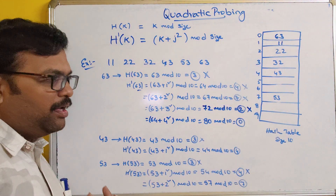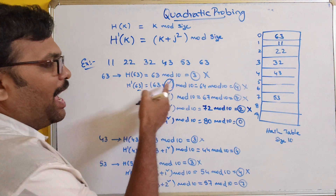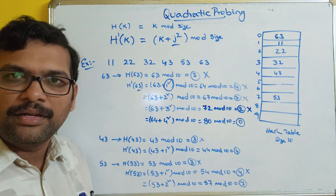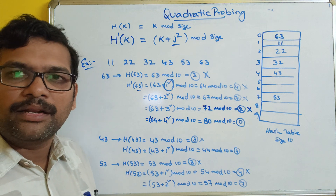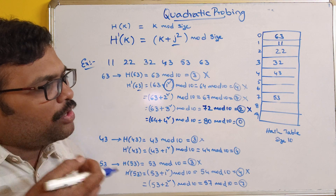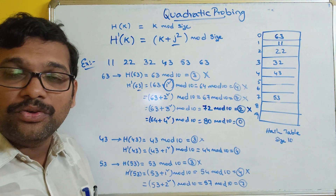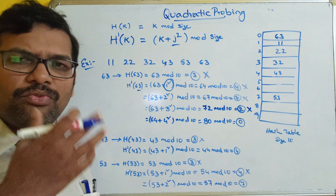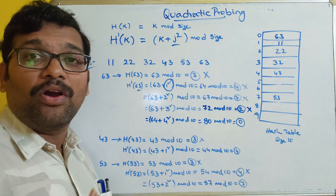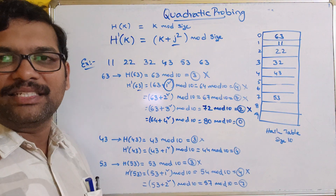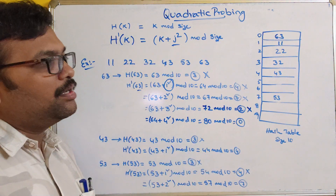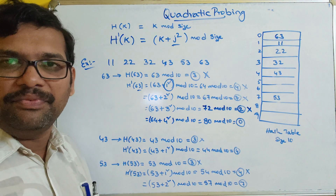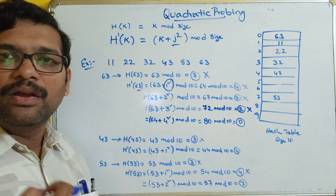So in this way, we calculate j² and add it to the key to find the hash code when there is a collision. One drawback is that not all references will be filled — there may be slots where elements cannot be inserted. This is called secondary clustering, which is the main drawback of quadratic probing. Also, searching for an element is somewhat difficult.